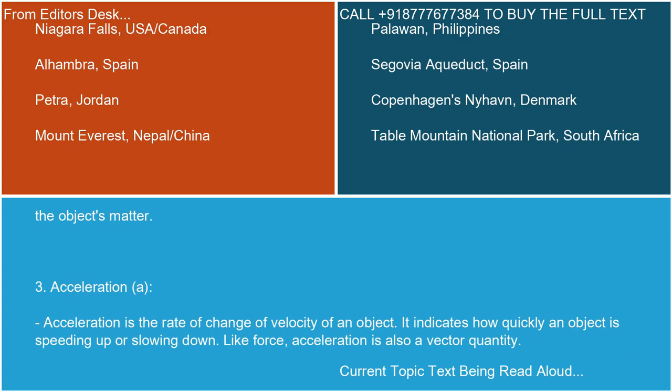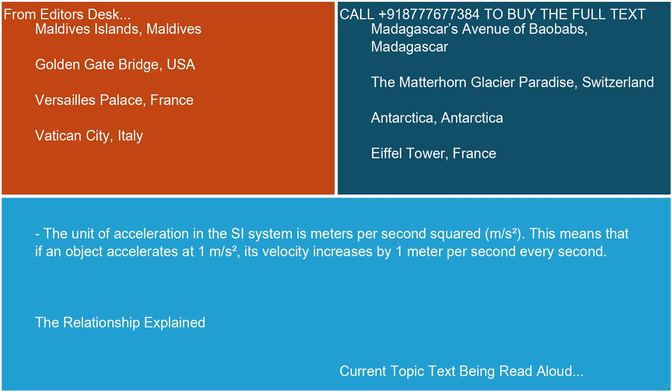Key Concept 3: Acceleration. Acceleration is the rate of change of velocity of an object. It indicates how quickly an object is speeding up or slowing down. Like force, acceleration is also a vector quantity. The unit of acceleration in the SI system is meters per second squared (m/s²). This means that if an object accelerates at one meter per second squared, its velocity increases by one meter per second every second.